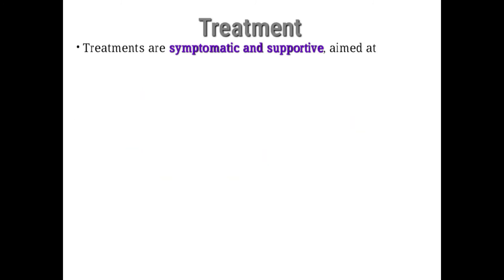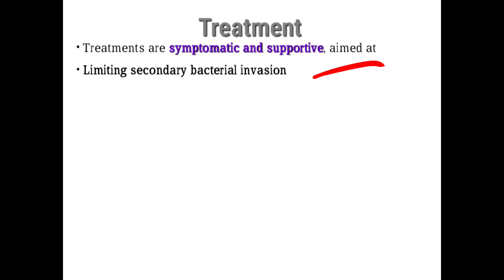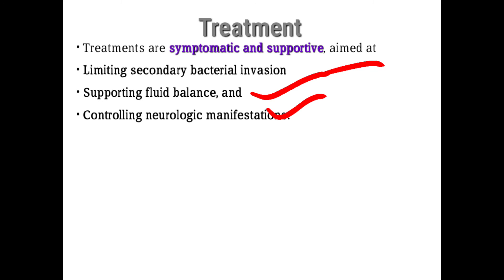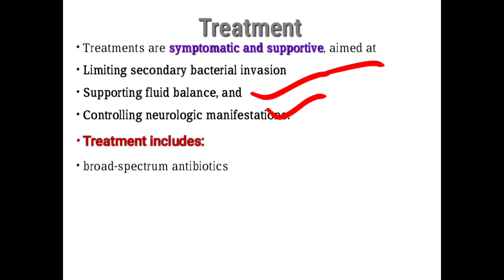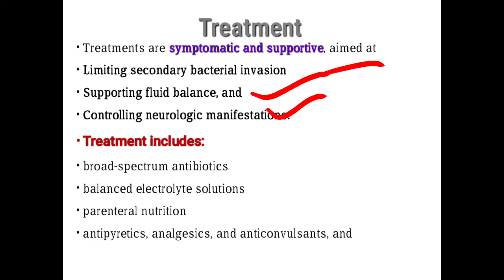Since canine distemper is a viral disease, there is no specific treatment. Treatments are symptomatic and supportive, aimed at limiting secondary bacterial infections, restoring fluid balance lost through diarrhea and vomiting, and controlling neurological manifestations. Treatment options include broad-spectrum antibiotics to prevent secondary infections, balanced electrolyte solutions to rehydrate the animal, parenteral nutrition, antipyretics, analgesics, anti-convulsants, and good nursing care.